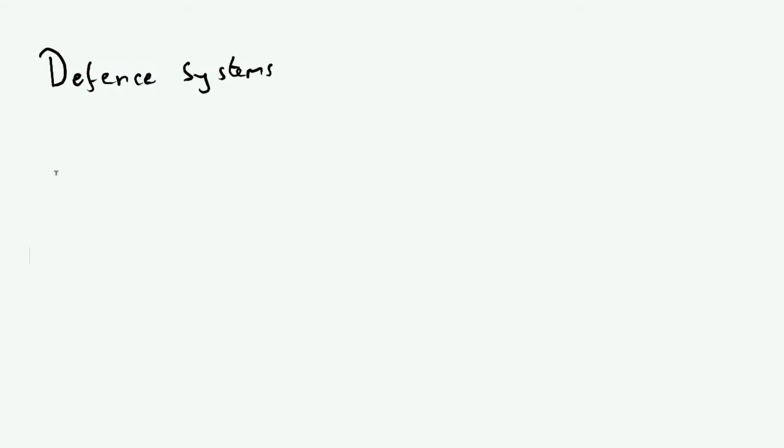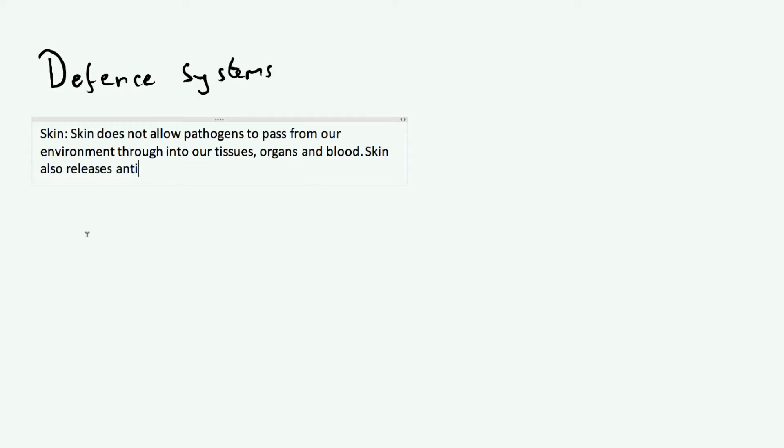We have different components to our body or our defense which aim to stop pathogens getting in. The first one being our skin. Our skin is actually a very effective defense. It stops things from getting into our body, so the skin does not allow pathogens to pass from our environment through into our tissues, organs, and blood. Also, the skin releases antibacterial or antimicrobial chemicals which can kill pathogens.